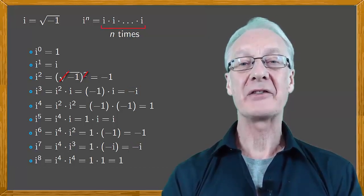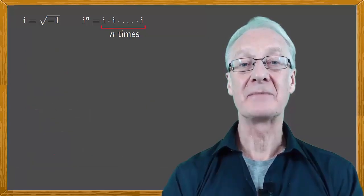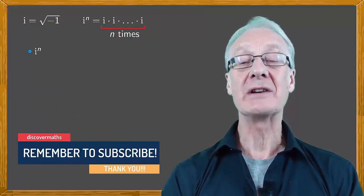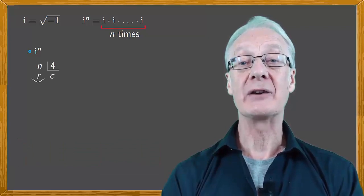When these things happen in math, there's usually a trick that allows you to get results efficiently. Suppose we want to calculate i to the n for values of n greater than or equal to four. We divide n by four, obtaining a quotient and a remainder.